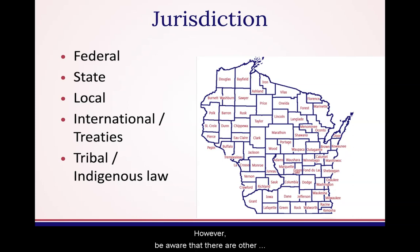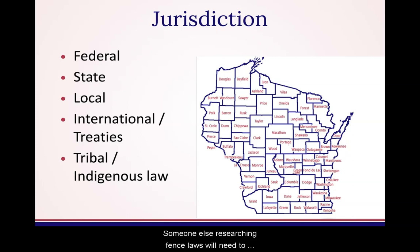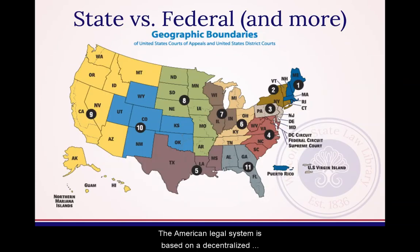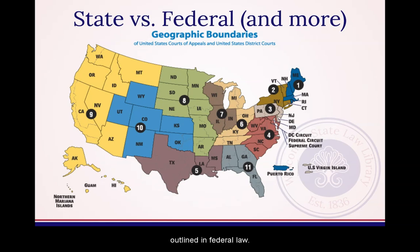Be aware that there are other levels of law that may be of interest. For example, someone researching disability law may want to research federal ADA laws and regulations as well as state laws. Someone else researching EMS laws will need to research local ordinances as well as state statutes. The American legal system is based on a decentralized system. The federal government has significant powers, and individual states keep powers not specifically outlined in federal law.